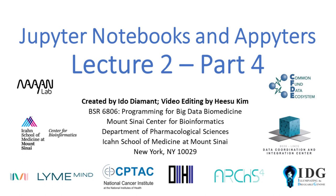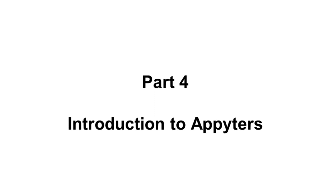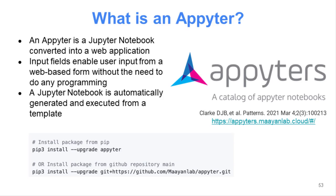The last part of this lecture is about Appyters. I'm going to introduce what they are. This is really the work of Daniel Clark, who is a data scientist in the lab. He came up with this idea of taking a Jupyter notebook and converting it to a web app. This way you enable biologists that don't have any coding skills to execute Jupyter notebooks with their data.